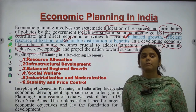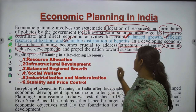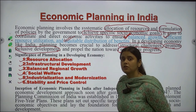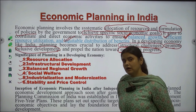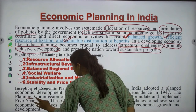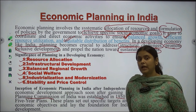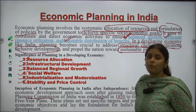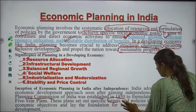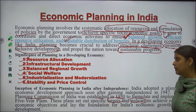Next is the inception of economic planning. After independence in 1947, it was essential to have an economic planning structure or model. For that purpose, a Planning Commission was established in 1950 to formulate and implement the five-year plans. These five-year plans' main objective was to achieve economic growth and social welfare of the citizens of India, setting out specific targets and policies to achieve socio-economic objectives and laying the foundation for India's economic growth and development.